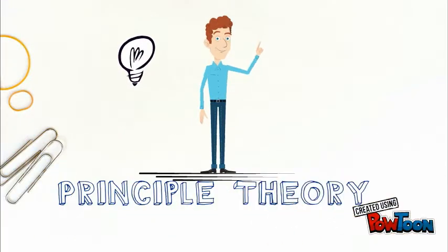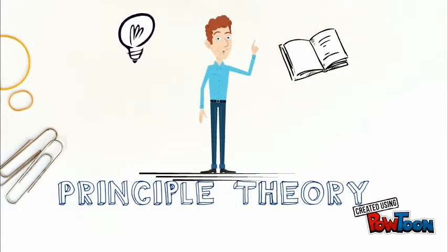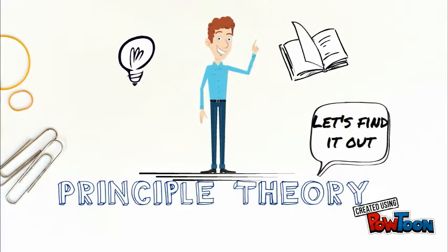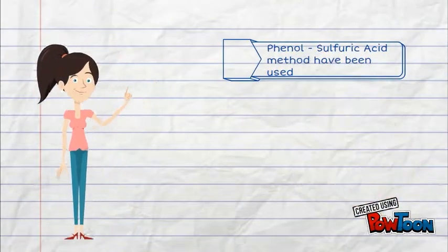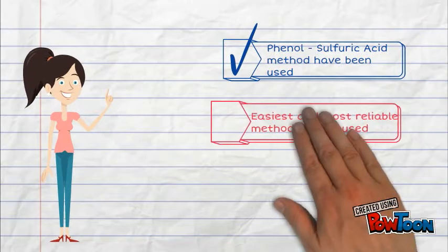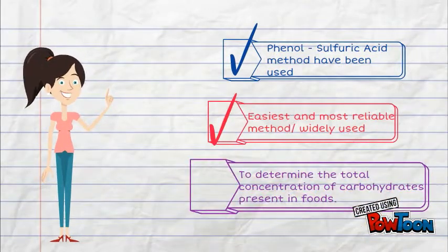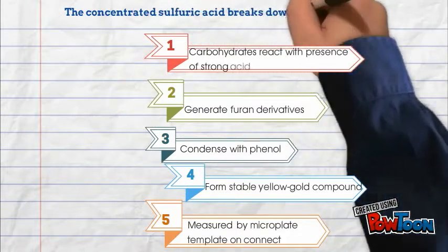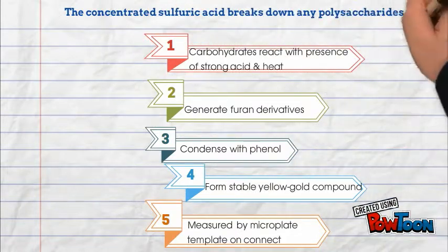We proceed to principle theory. The method of sulfuric acid has been used for this experiment because it is widely used to determine the total concentration of carbohydrate present in food. Carbohydrate present will react with sulfuric acid and it will be heated.